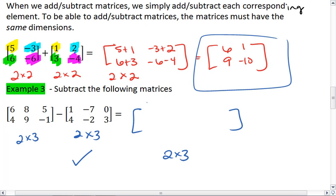What we're going to do is we're going to just subtract each corresponding element. We get 6 minus 1. 8 minus a negative 7 becomes 8 plus 7. 5 minus 0.